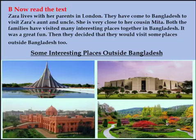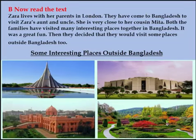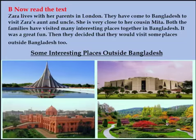Jara is very close to her cousin, Mita. Close to means intimate, near, or closely connected. Jara is very intimate with her cousin Mita. Both the families have visited many interesting places together in Bangladesh. Both families means Mita's and Zara's families have visited many interesting — interesting means holding or catching the attention, or fascinating — places, meaning locations, together in Bangladesh.